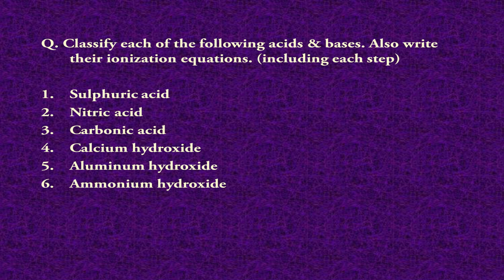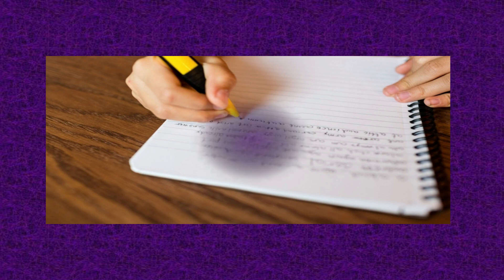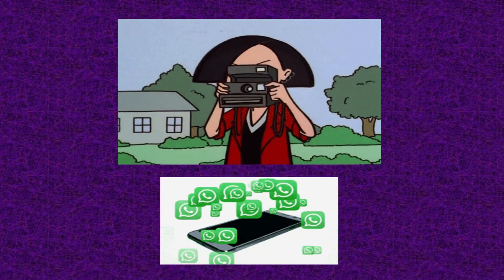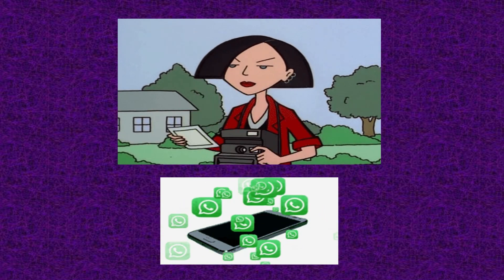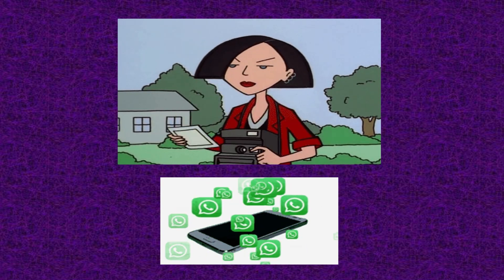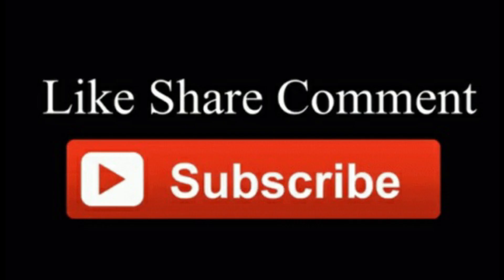How will you solve this homework? Very simple — write these equations on a piece of paper. Do not forget to write your name on that paper. Then take a picture from your mobile and send me that picture through WhatsApp. You will find the WhatsApp number in the description. If you have any questions, you can ask me in the comments. Please like and share this video and subscribe to my channel for more videos. Thank you.